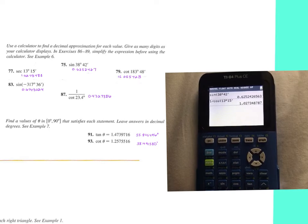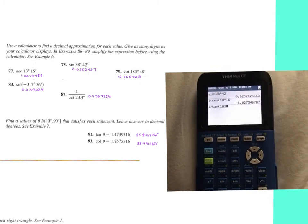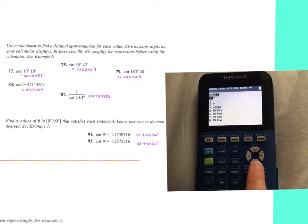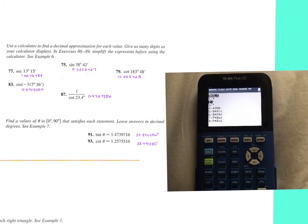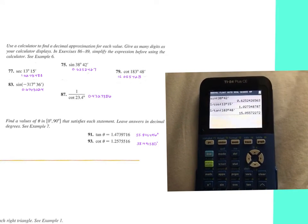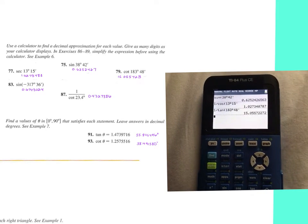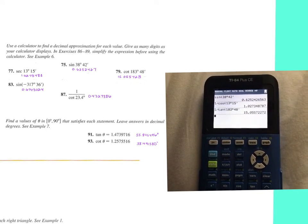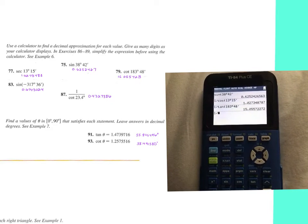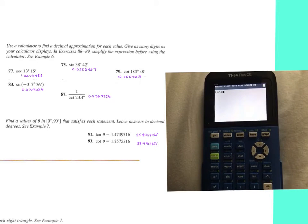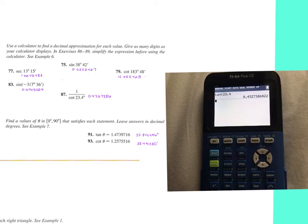There's that 1.0273488 is how it finally rounded. Cotangent for number 79, 1 divided by tangent, 183 second apps degrees. 48 second apps single tick mark, and there's the 15.055723 is how it would round. For 87, you're doing 1 divided by cotangent, so it's actually just tangent, 23.4, and there's that .432.